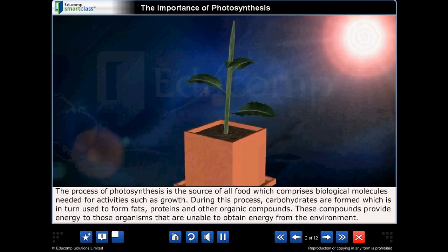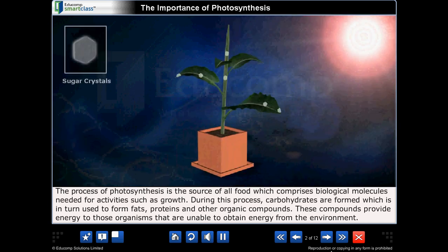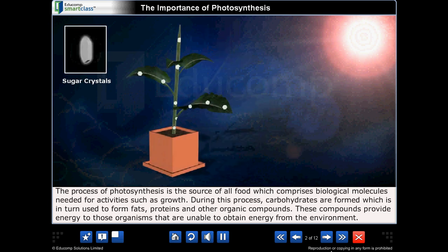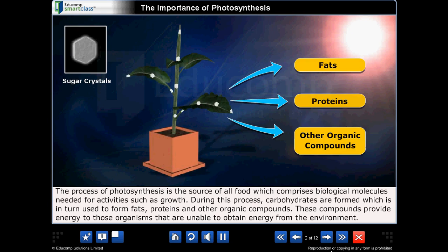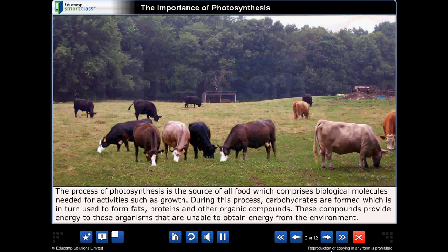The process of photosynthesis is the source of all food which comprises biological molecules needed for activities such as growth. During this process carbohydrates are formed which in turn is used to form fats, proteins and other organic compounds.